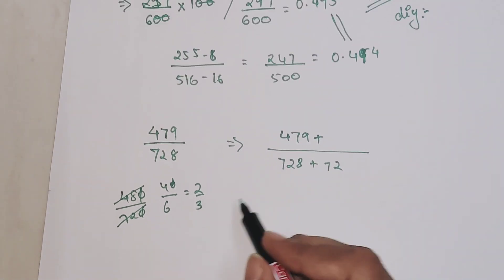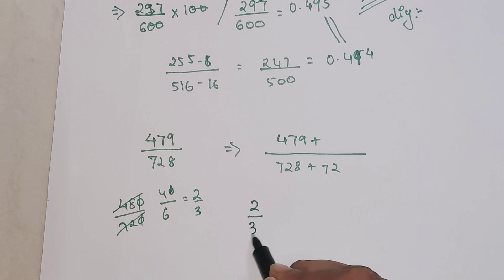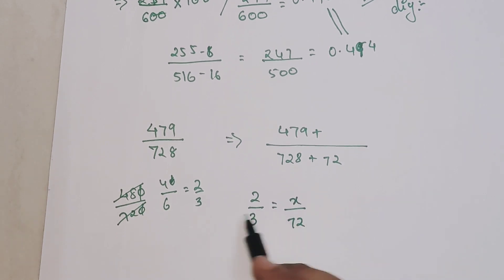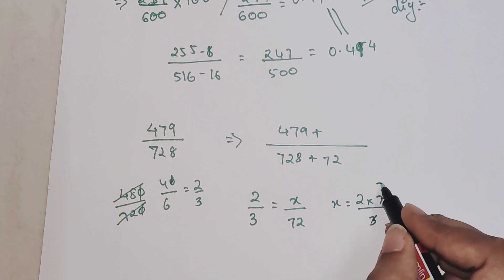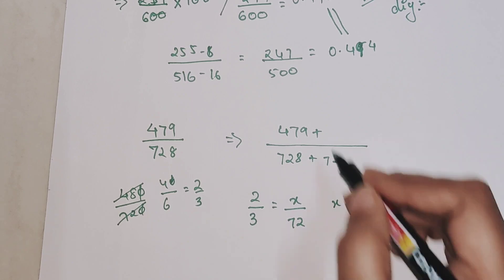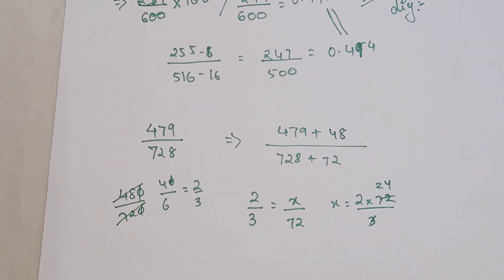Now this is interesting. You have to see this way: 2/3 = x/72, so you need to see what is the value of x. You are coming out to be x = 2×72/3, so we are getting 48.